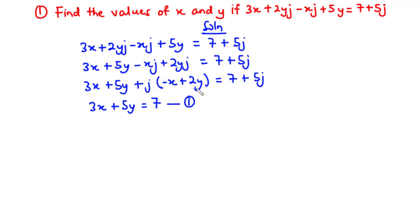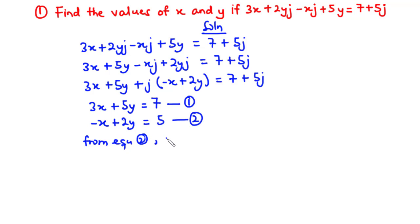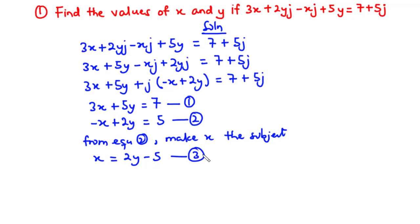Equation 1 is 3x + 5y = 7, and equation 2 is -x + 2y = 5. We will make one variable the subject from one of the equations. From equation 2, making x the subject by transposing gives us equation 3: x = 2y - 5. Substituting equation 3 into equation 1: 3(2y - 5) + 5y = 7.